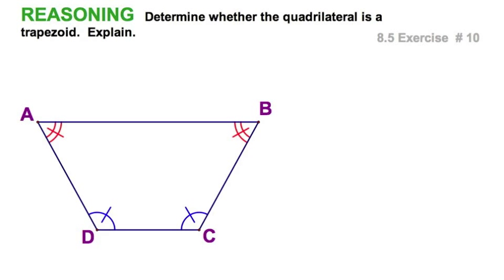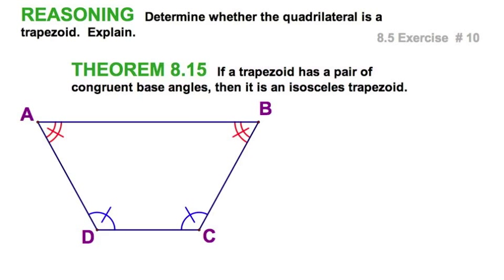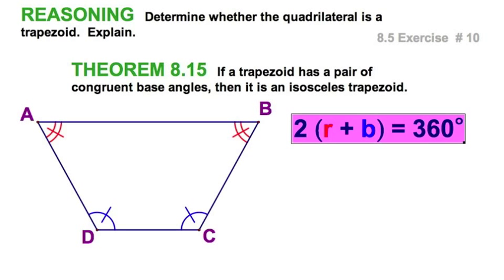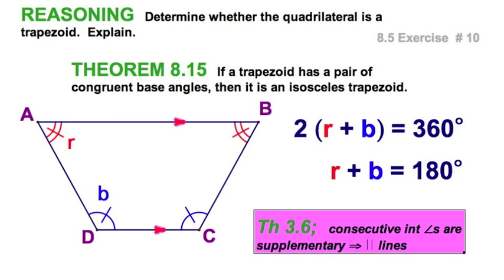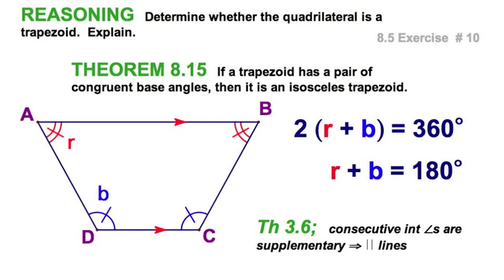Is this a trapezoid? It would appear by theorem 8-15 that it is. But read that carefully — it says if a trapezoid has a pair of congruent base angles. It doesn't say it's a trapezoid to start with. We could write a theorem for that, but let's do something quick. I'm going to assign r for the red angle and b for the blue. Then a little algebra gives me this, and I can go back to chapter 3: consecutive interior angles that are supplementary — therefore, I do have a trapezoid.